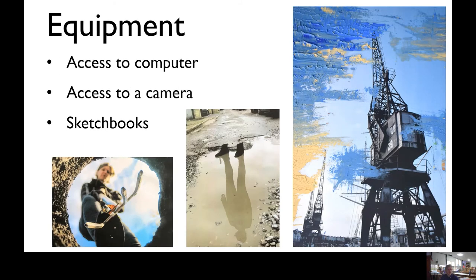In terms of equipment, a big thing is access to a computer. Obviously here we have access to computers — every lesson you will be able to use a computer, but ideally you will have access to a computer at home. Access to a camera — in school everyone has different cameras, but as long as you have something that takes a half decent photograph you'll be fine. We have a range of DSLRs here in school that can be used as well. And also sketchbooks — quite often we will be working within sketchbooks. Some people choose to work digitally via PowerPoint, but it's still useful to have a sketchbook to keep and record any physical edits that you do.